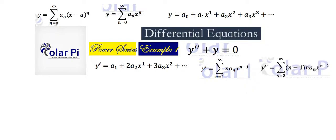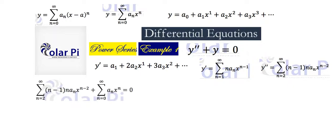y double prime is clearly this. Now that we've got y double prime and y, we're able to rewrite our given differential equation using series. We rewrite it like this, because it says y double prime plus y equals zero.